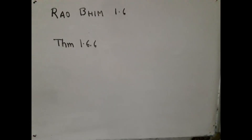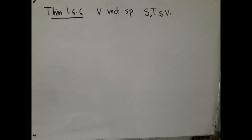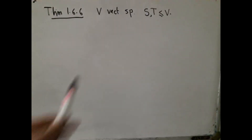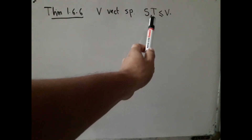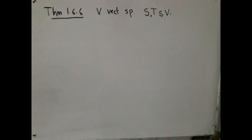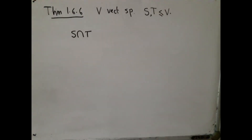Ra Bhimashankaram 1.6, our specific focus will be on 1.6.6, the theorem. The theorem starts with a vector space V with two subspaces — not just subsets — subspaces S and T of V. Then the theorem constructs two more subspaces out of S and T: one is S intersection T and the other is S plus T.